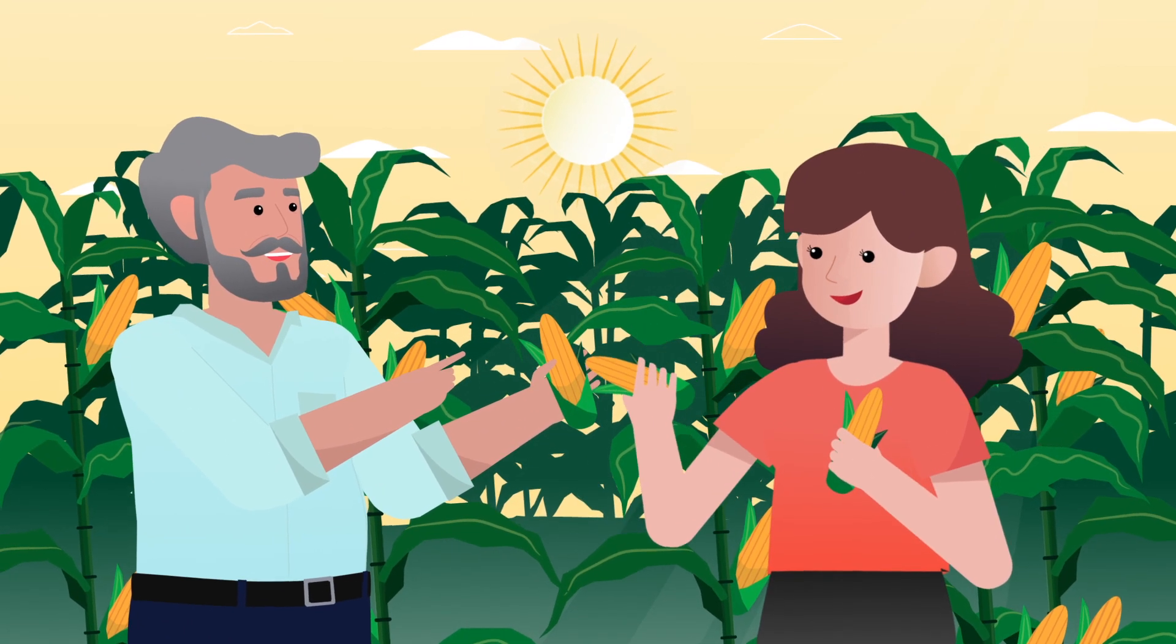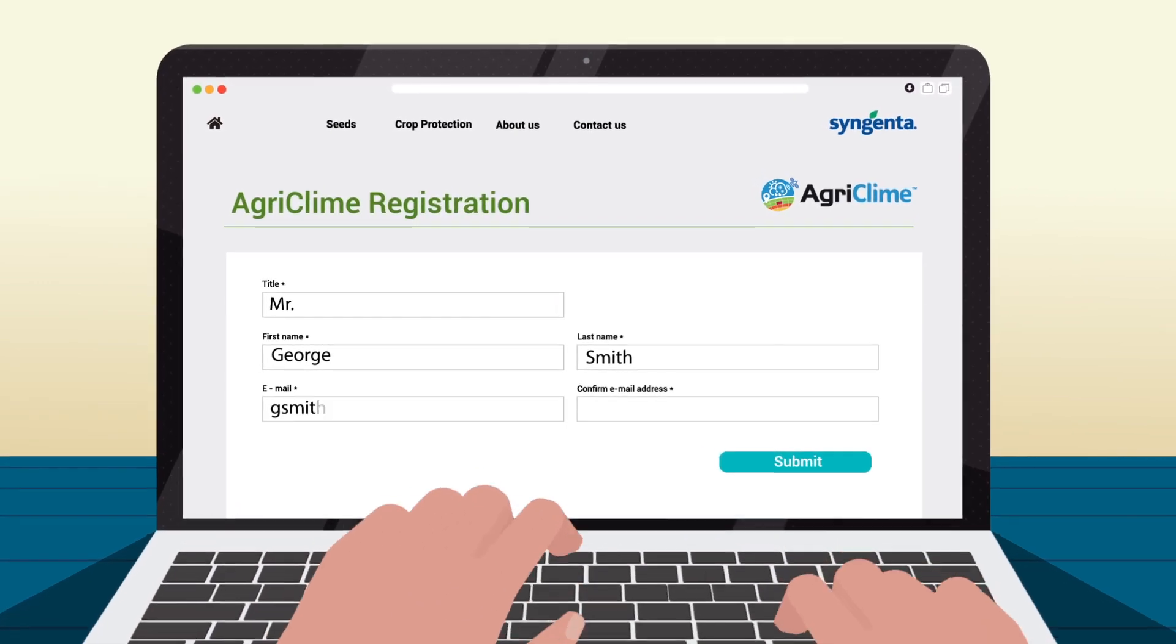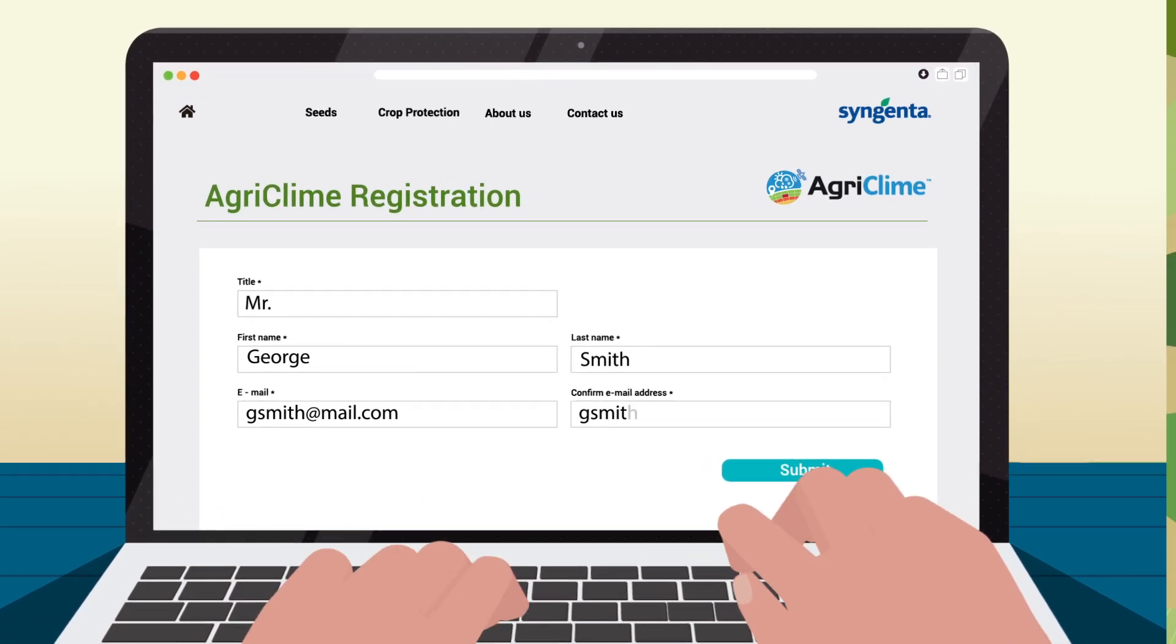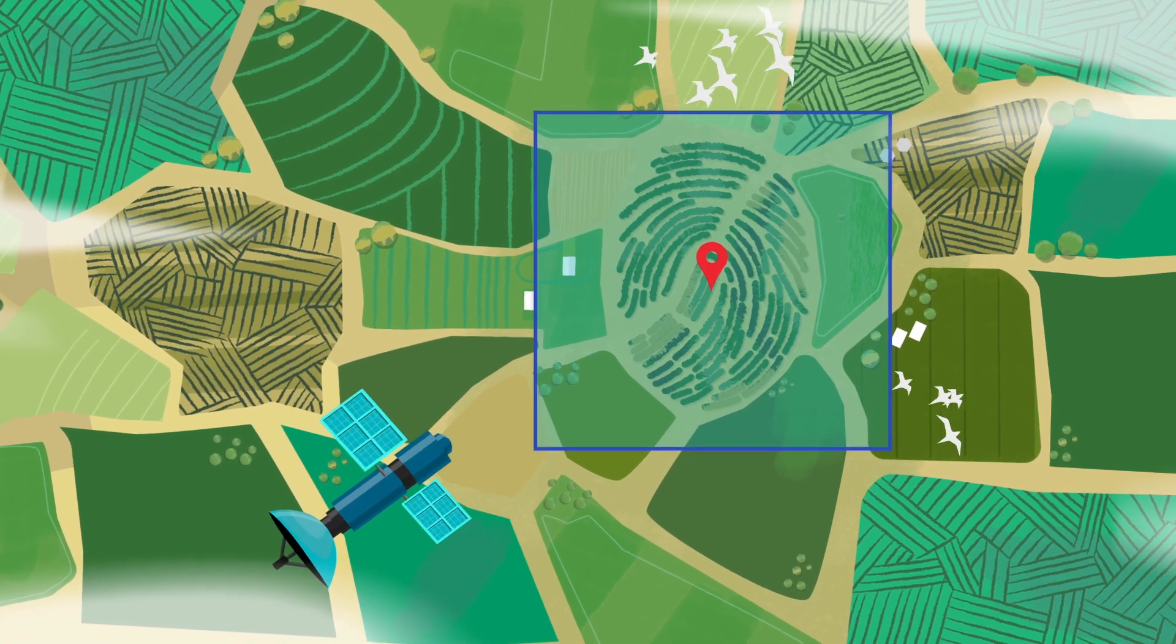George and Sally are farming partners. When George and Sally register online for the AgriClimb drought offer with their Syngenta sales representative, they enter their farm location to determine which weather block it belongs to.